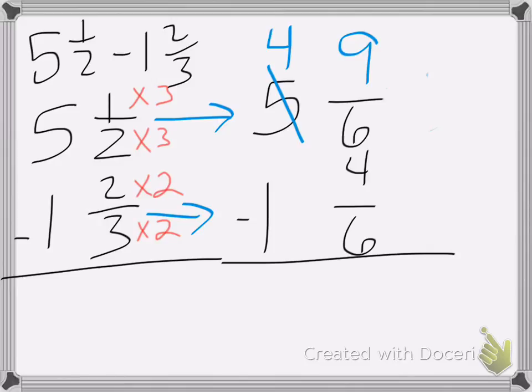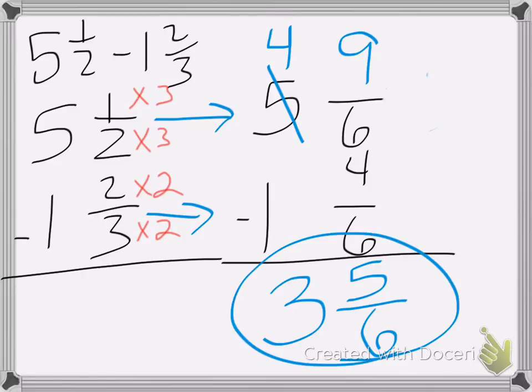9 sixths minus 4 sixths is 5 sixths. 4 minus 1 is 3. So my answer is 3 and 5 sixths.